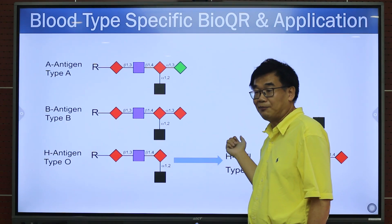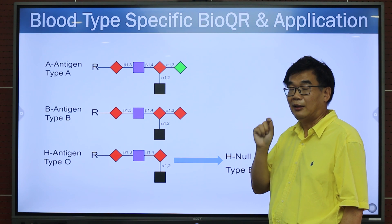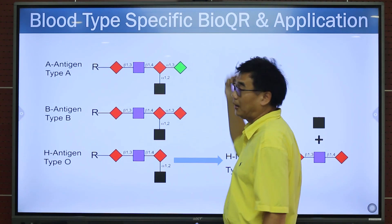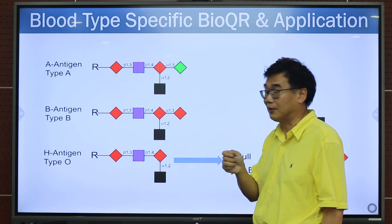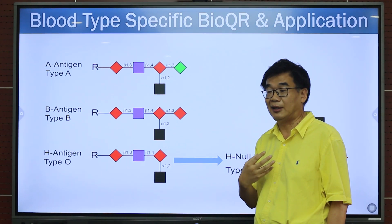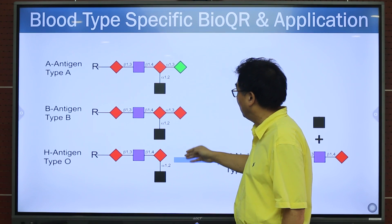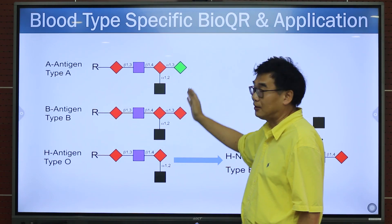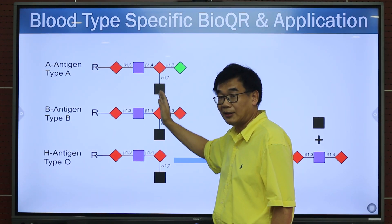The second bio-QR I want to share is the blood-type-specific bio-QR. This is not species-specific — it is type-specific. We know there are four blood types: A, B, O, and AB, and they are determined by the bio-QRs on our blood cells.